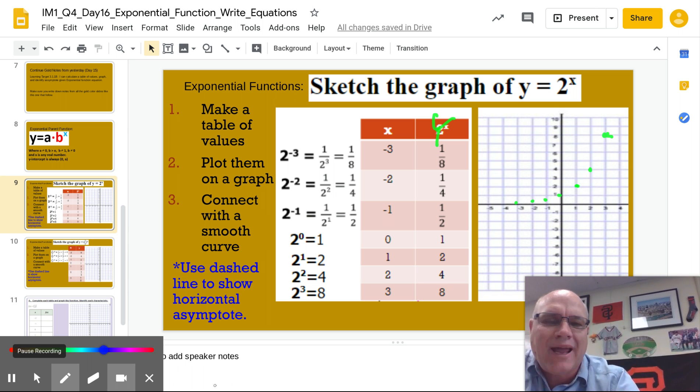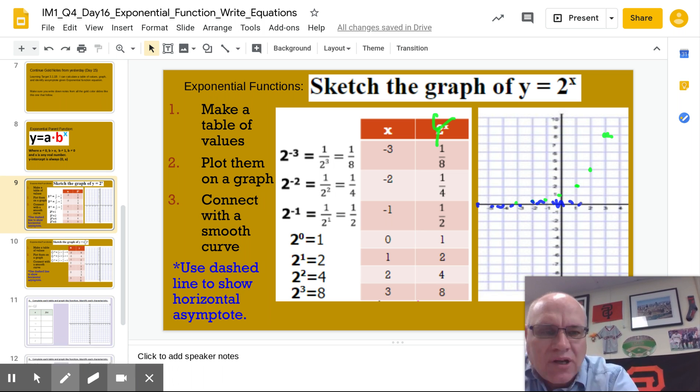So what we have is going to be called a line, which is going to be called a horizontal asymptote. And in this case, in this example, that horizontal asymptote is actually the x-axis.